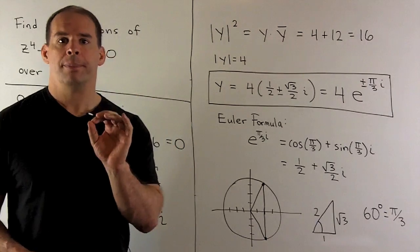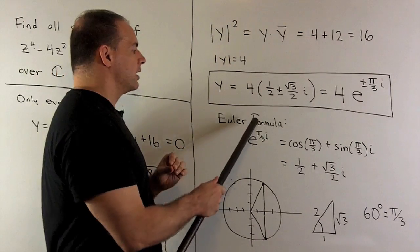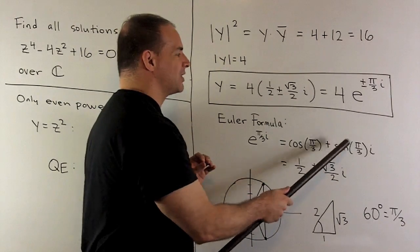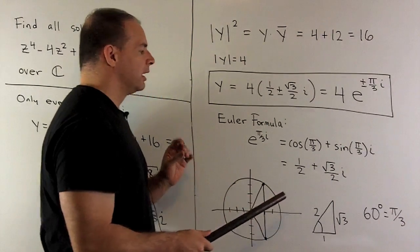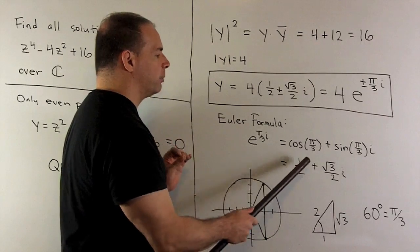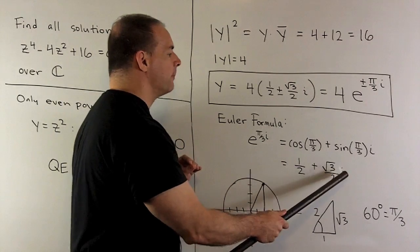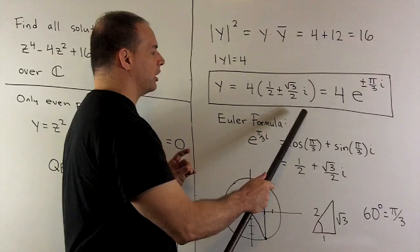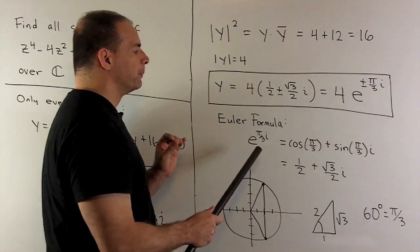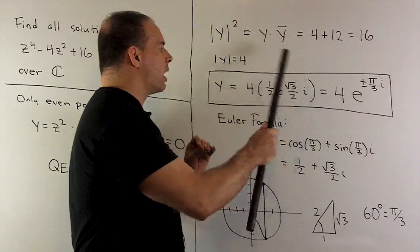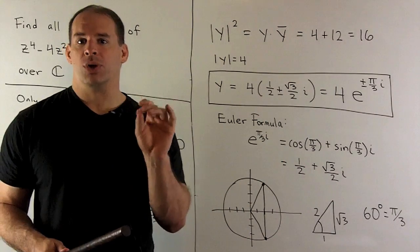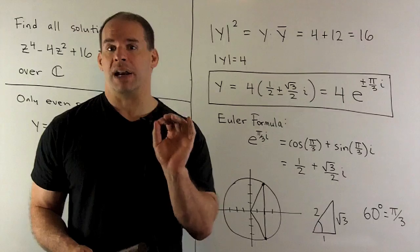Using Euler's formula, we have e to the pi-thirds i is equal to cosine of pi-thirds plus sine of pi-thirds i. Then if we just peel those numbers off the triangle, we're going to have 1 half plus square root of 3 over 2i. And that's one of our numbers here. If I put in minus pi-thirds, we note we'll get our second number just by noting that the evenness and oddness of cosine and sine take care of the minus sign.